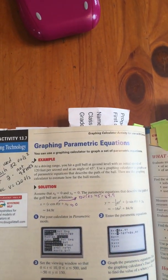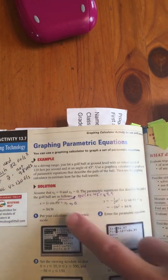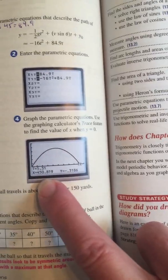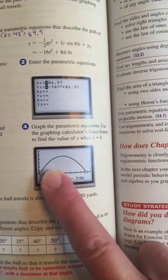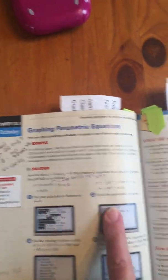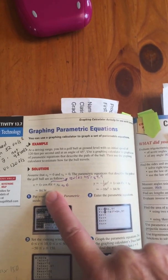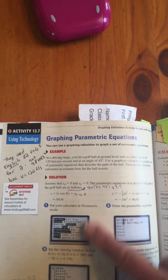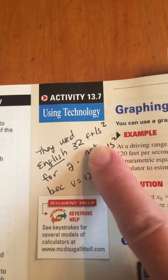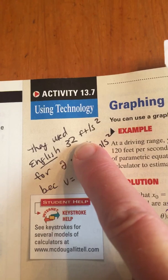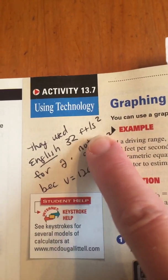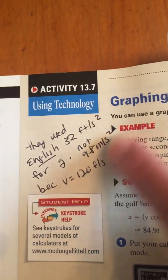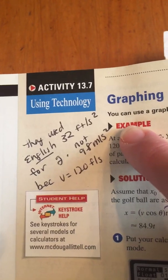You can watch my physics videos where I explain that whenever you have this parabola shape, there's an X component and Y component that are independent. So we have an X equation and a Y equation, and they went ahead and solved them for us.